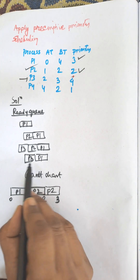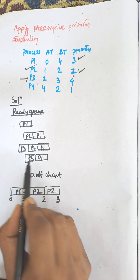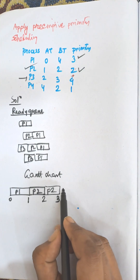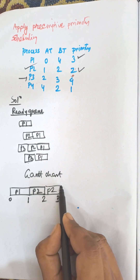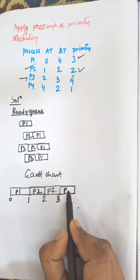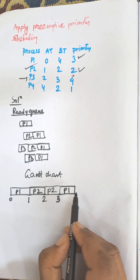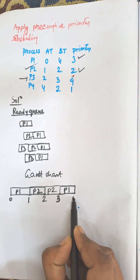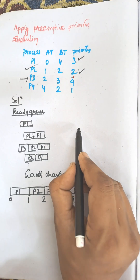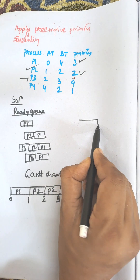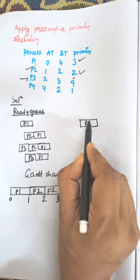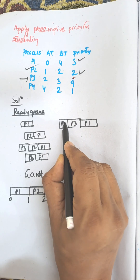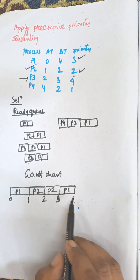Among P1 and P3, the priority of P1 is better, so P1 will be selected for execution. It will execute up to the next process arrival time, which is up to time 4. At time 4, P1 is available, P3 is available, and P4 is now available in the ready queue.